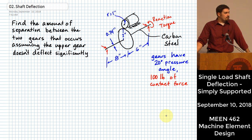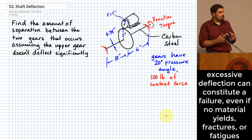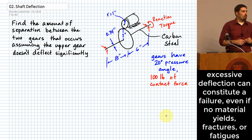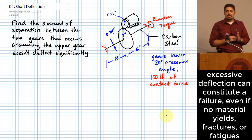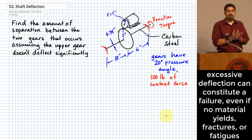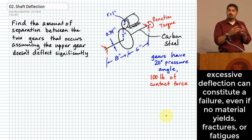I want to mention this right at the outset: you don't actually have to have a part experience permanent deformation or even fracture for there to be a failure in a machine. There are other ways that a machine can experience failure. If a part deflects a little ways, but deflects too far, it might get into the path of another part of the machine, and you could end up destroying something.